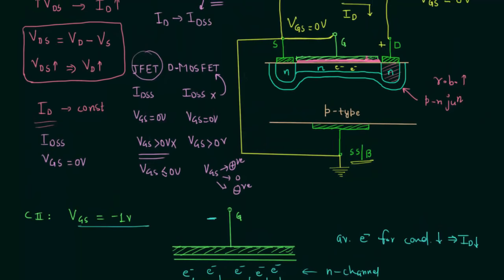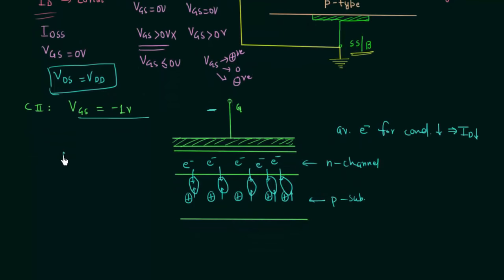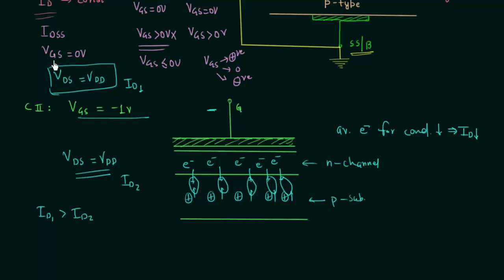When VGS is negative, the drain current is reduced compared to when VGS was 0V. If VDS equals VDD in both cases, the drain current ID1 at VGS equal to 0V will be larger than ID2 at VGS equal to minus 1V. This is because fewer electrons are available for conduction due to the recombination process caused by the negative gate voltage.